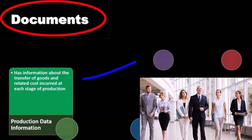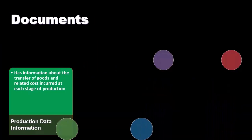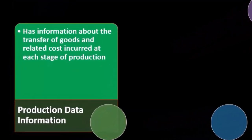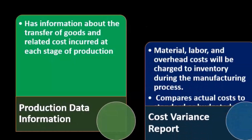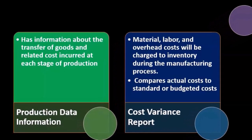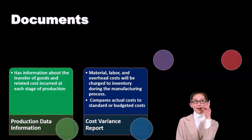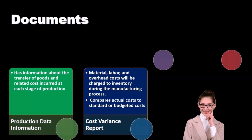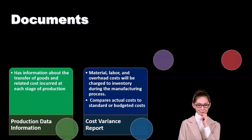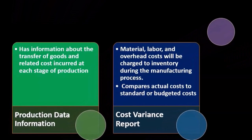Production data has information about the transfer of goods and related costs incurred at each stage of production. The cost variance report compares actual cost to standard or budgeted cost. Material, labor, and overhead costs are charged to inventory during the manufacturing process. We budget the production process using standard costs, and then we look at the variance report — the difference between what was budgeted for these components and what actually happened.